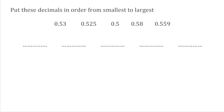For today's video we're going to take a quick look at ordering decimals from smallest to largest. A simple thing we can do when ordering decimals is to make sure that we've got all the numbers to the same amount of decimal places. We can see we've got a mix of numbers to 1, 2 and 3 decimal places, so for this question we're going to put them all to 3 decimal places.